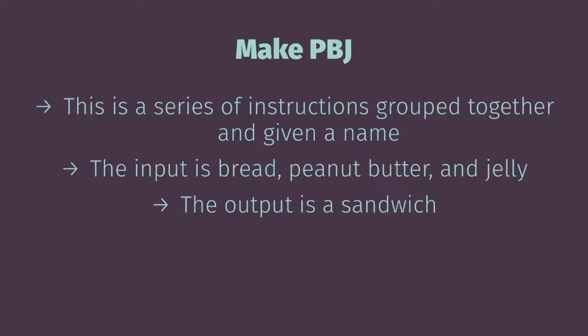A lot of the instructions are implied, and chances are whoever taught you to make a peanut butter and jelly sandwich is the person whose set of instructions you're now thinking about when I say that. That one sentence implies there are a lot of steps we need to take. We may consider the input to this system as bread, peanut butter, and jelly, and the output as a sandwich. So something like making a sandwich provides us with a grouped set of instructions with some potential for input and output.